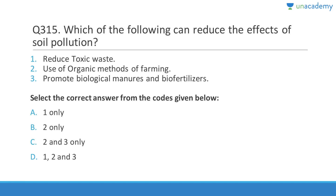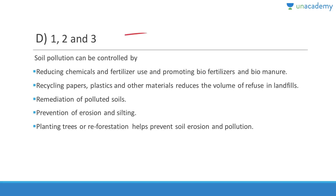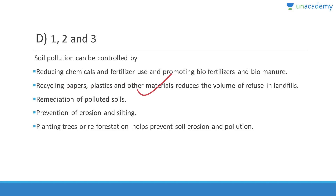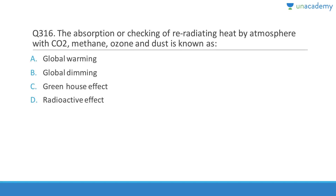Question 315: Ways to reduce soil pollution include reducing toxic waste, using organic farming methods, and promoting biological manures and biofertilizers. Answer is D (1,2,3). Soil pollution can be controlled by reducing chemical and fertilizer use, promoting biofertilizers and biomanure, recycling paper and plastics, remediating polluted soils, preventing erosion, and reforestation.